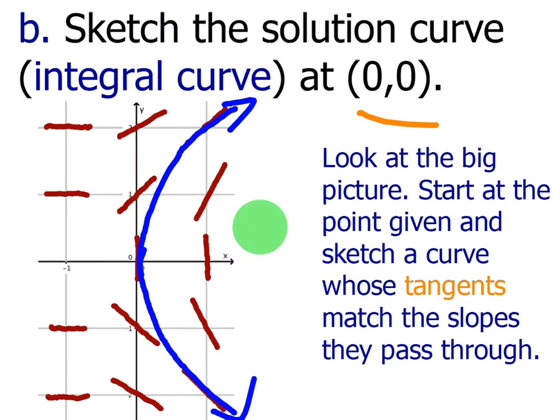And, again, the key is the starting point. Because I'm starting at (0,0), I know that it has to start out with a vertical tangent, and then I curve around the other slopes that make sense so that it matches the tangents.